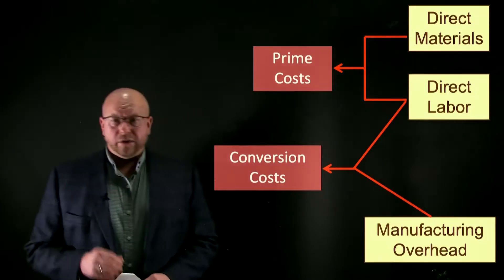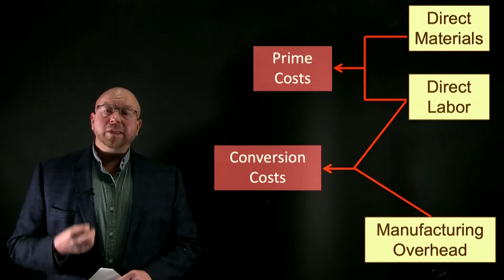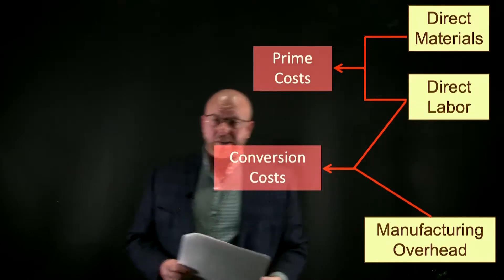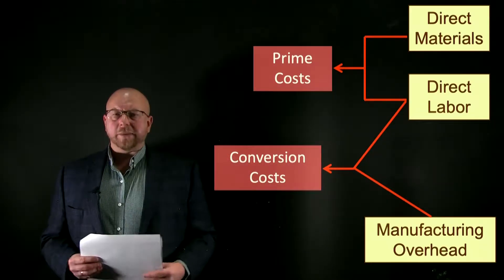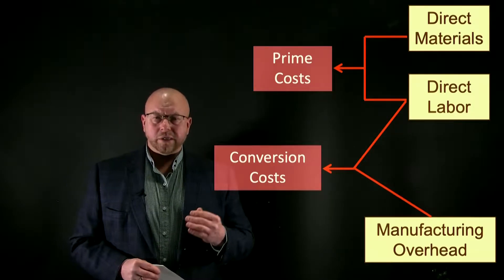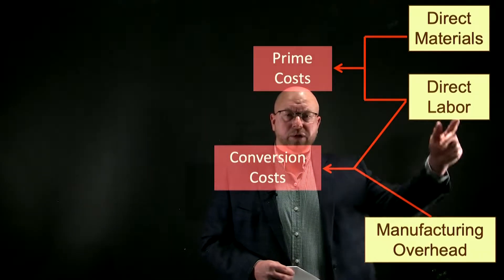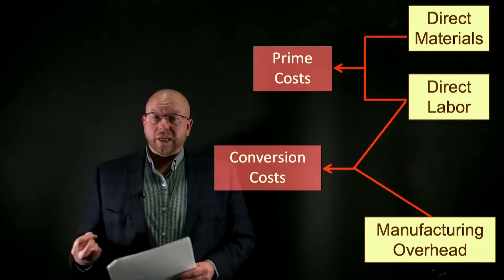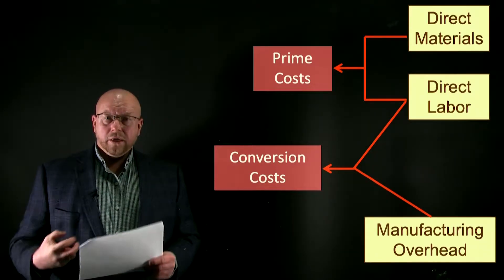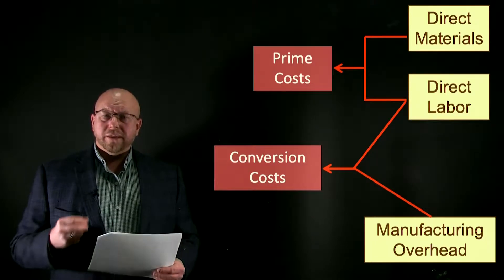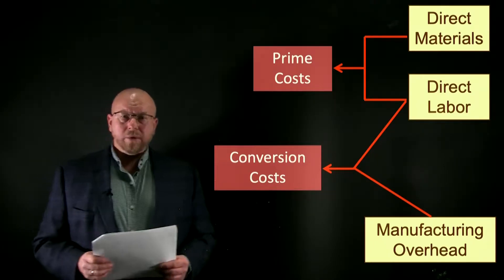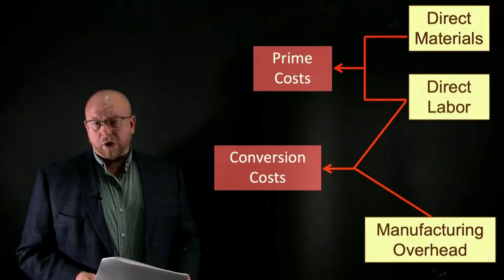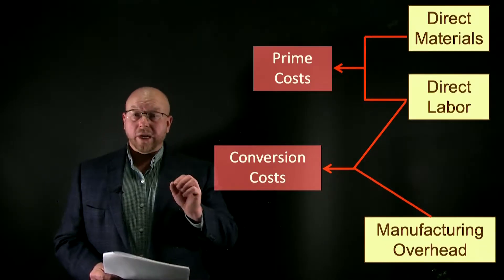Before we get into some math, let's talk about a little more terminology. There are prime costs — direct materials and direct labor are those prime costs — and then conversion costs. The conversion costs measure the cost of things used to convert direct materials into finished goods. We apply direct labor and manufacturing overhead to convert direct materials to finished goods — that's why they're called conversion costs. The prime costs are the two building blocks for our cost object, and they are typically traced, whereas manufacturing overhead is allocated.